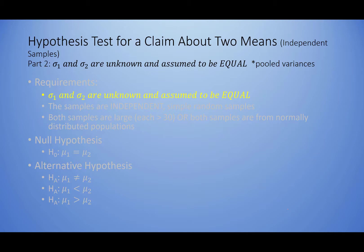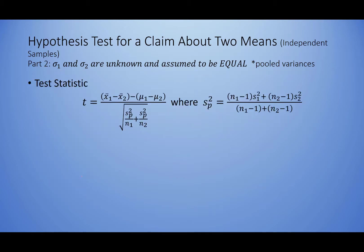That was our first situation. In our second situation, σ₁ and σ₂ are still unknown, but this time we are going to assume they are equal to each other. This is often referred to as pooled variances. The requirements are the same except that now we assume the standard deviations are equal.